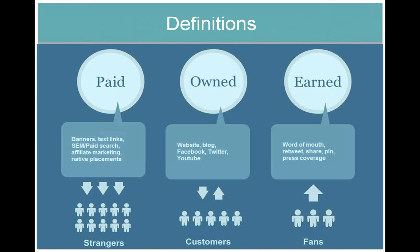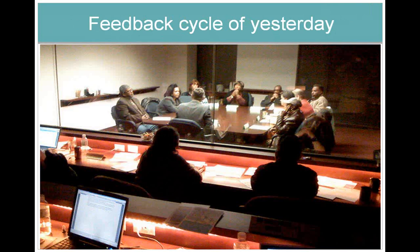For today's discussion, we're talking about blog posts — how do we get the most out of those and create smarter media buys using the content you're already creating? Paid is pretty straightforward: text links, paid search, affiliate marketing, native advertising — anything you're paying to distribute. Owned is your website, your blog, your Facebook, your Twitter accounts, your YouTube. And earned is anything that results from that: word of mouth, retweets, shares, pins, press coverage. Think about paid as strangers, owned as your customers, and earned as fans and potential customers.